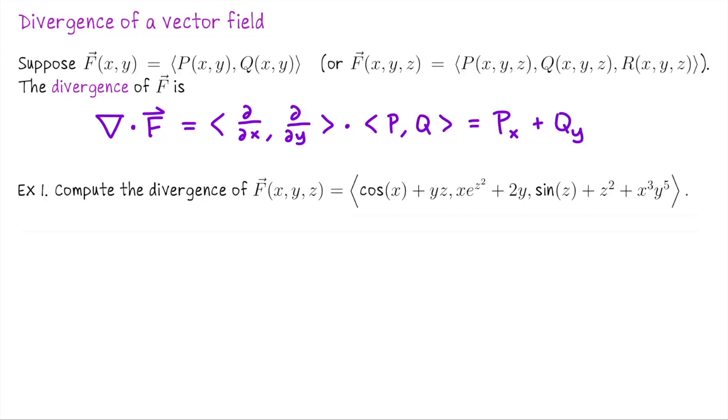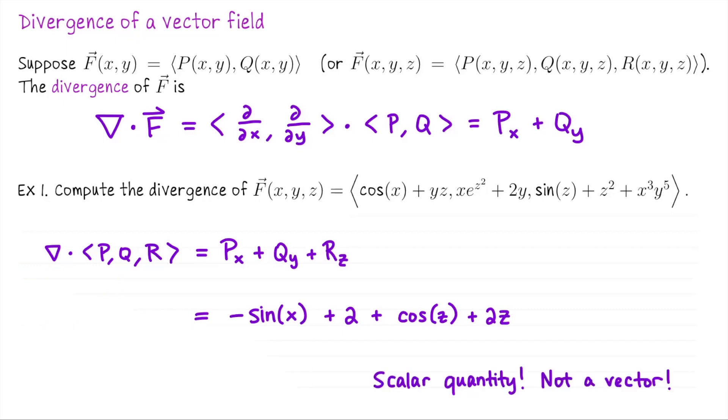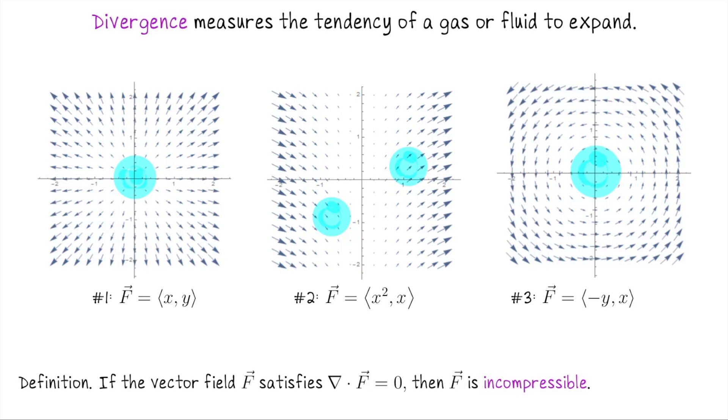Let's compute the divergence of this vector field in R3. We're going to have d/dx, d/dy, d/dz dot P, Q, R. That's going to give us dP/dx plus dQ/dy plus dR/dz. Now we just go to the first component function P and differentiate with respect to x. That's going to be negative sine of x. Then we differentiate Q with respect to y, that's just going to be 2. Now we differentiate the third component with respect to z. We pick up cosine of z plus 2z. So you can see this is a lot faster than computing a curl. Keep in mind it's a scalar quantity, not a vector.